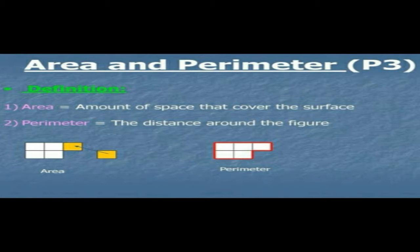I hope you now understand the difference between both. We have learned perimeter in previous classes — how to find the perimeter of a square, a rectangle, and any composite shape. We discussed the formulas and also solved practical examples. Now we are going to study area, and we will solve some problems related to area.